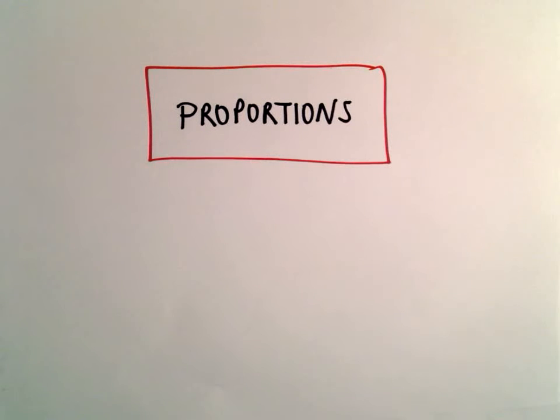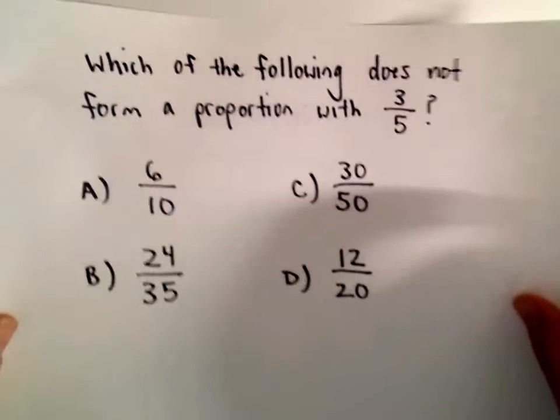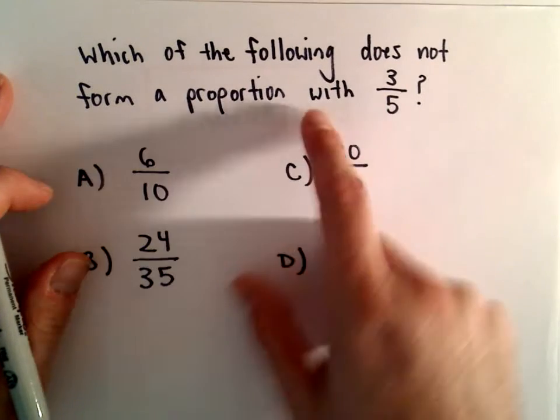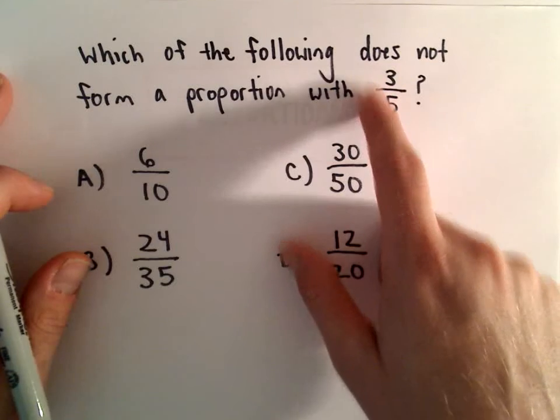Okay, here we're going to look at a question related to proportions, and all we want to figure out is which of the following does not form a proportion with the value 3 over 5.